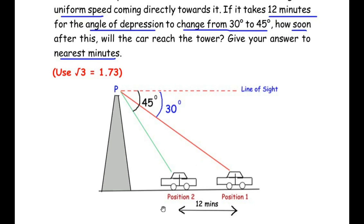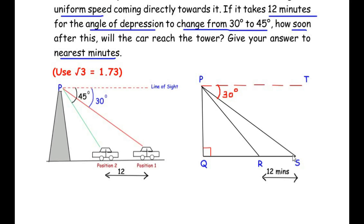We will use an equivalent diagram in terms of triangles. The tower is represented by line PQ, position 1 of the car by point S, and position 2 by point R. The time taken between R and S is 12 minutes. The line of sight is from point P to point T. The line PT is parallel to line QS, and PS acts as a transversal, so by alternating angles, angle S becomes 30 degrees.